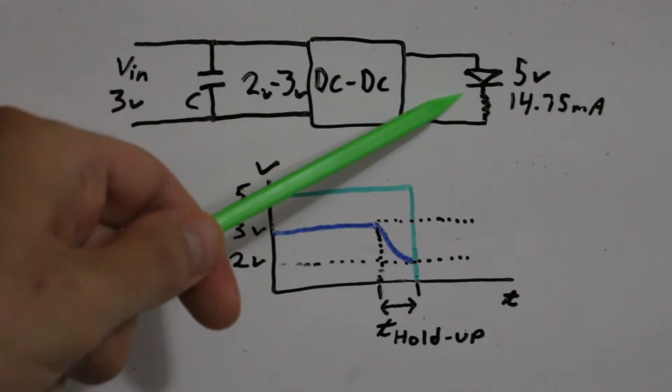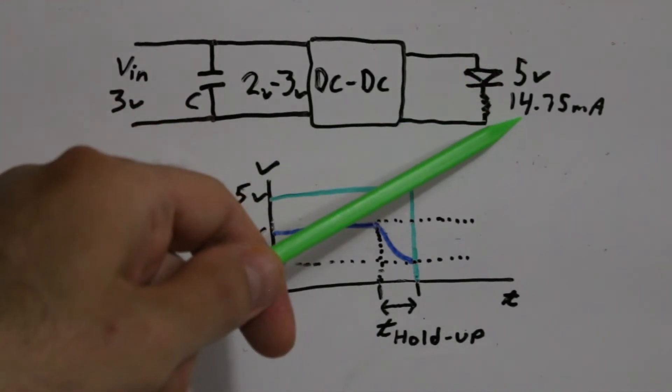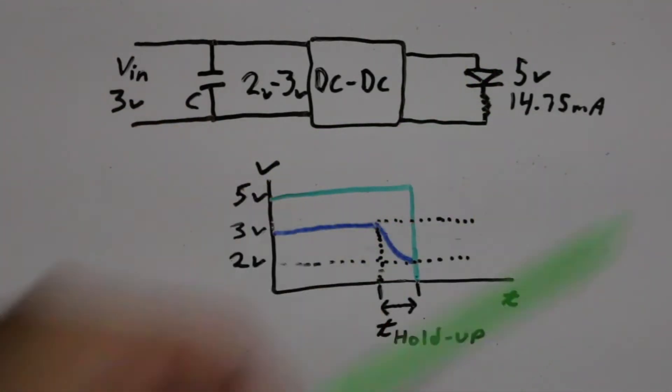And I have an LED as a load. It's an integrated package with a resistor built in, so it runs on 5 volts and it draws 14.75 milliamps.